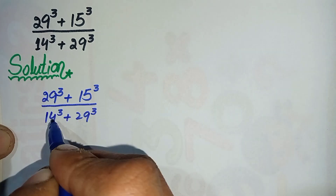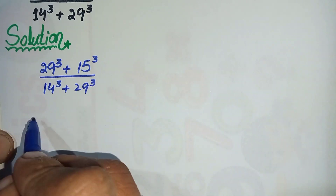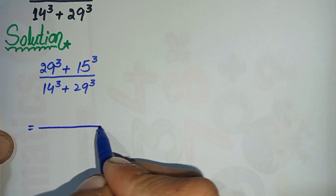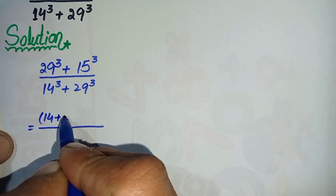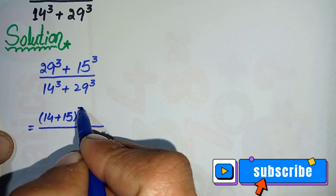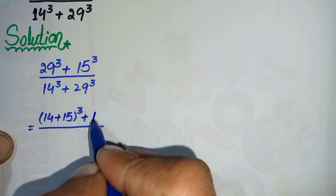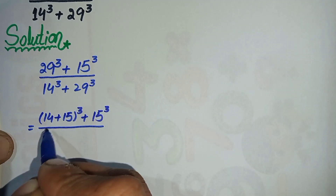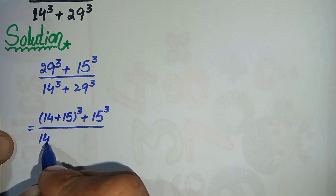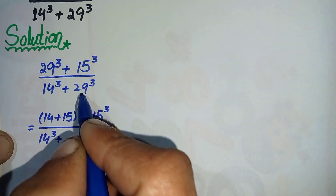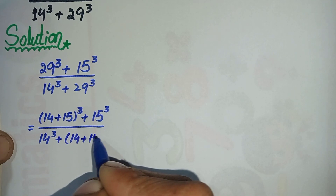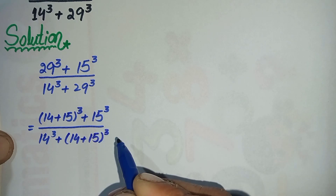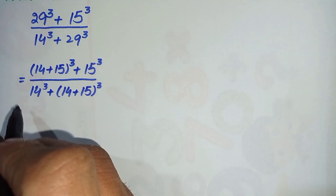In the next step, I will split 29 as the sum of 14 and 15. So it will become: (14 + 15)³ + 15³, divided by 14³ + (14 + 15)³. Now let us suppose that 14 is equal to x.